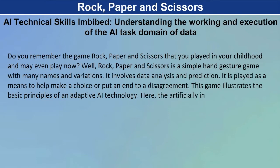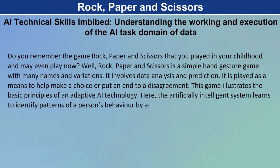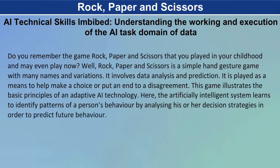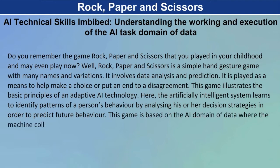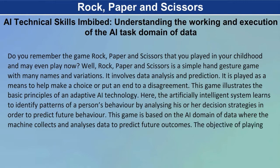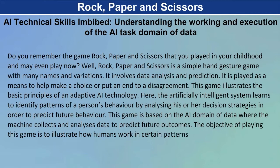This game illustrates the basic principles of an adaptive AI technology. Here, the artificially intelligent system learns to identify patterns of a person's behaviour by analysing his or her decision strategies in order to predict future behaviour. This game is based on the AI domain of data where the machine collects and analyses data to predict future outcomes. The objective of playing this game is to illustrate how humans work in certain patterns.